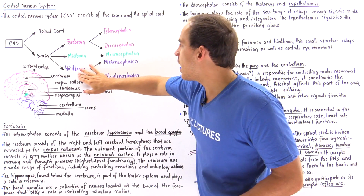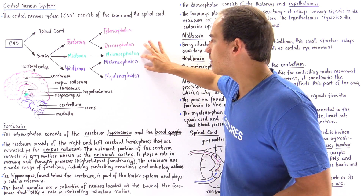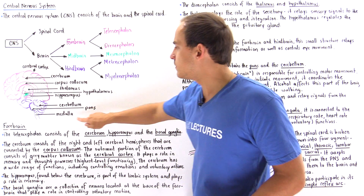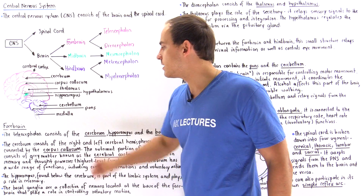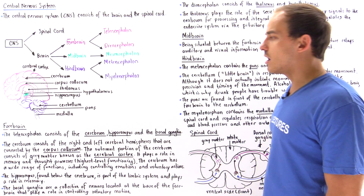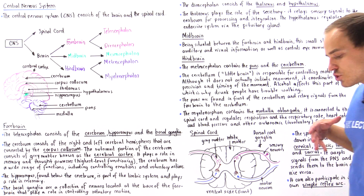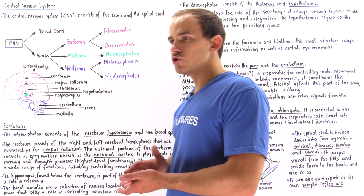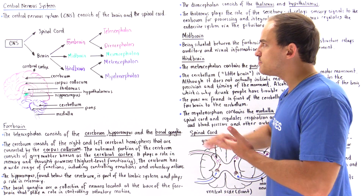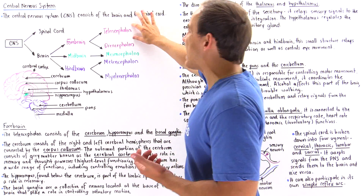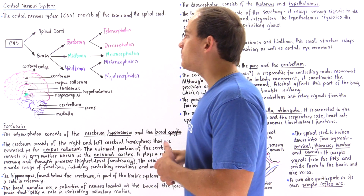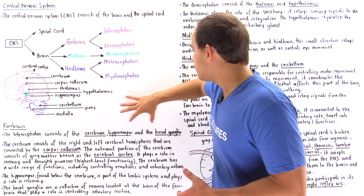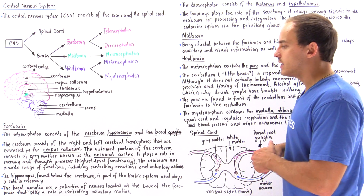The hindbrain contains the metencephalon, which has the cerebellum and the pons, while the myelencephalon consists of the medulla. Let's go through each of these structures and discuss their functions, beginning with the telencephalon region of the forebrain, which contains the cerebrum, the hippocampus, and the basal ganglia.